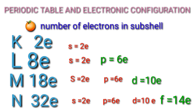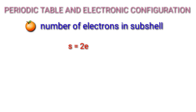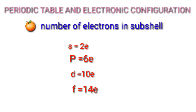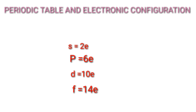Then balance — 14 electrons go to F subshell. F subshell maximum electrons — R electron — 14. Very, very important: what is well known is the maximum electrons in each subshell.